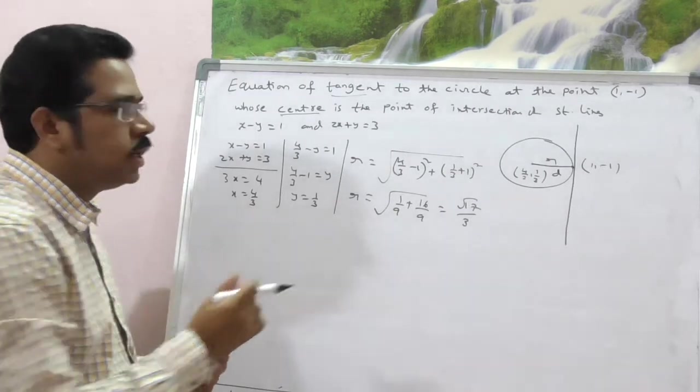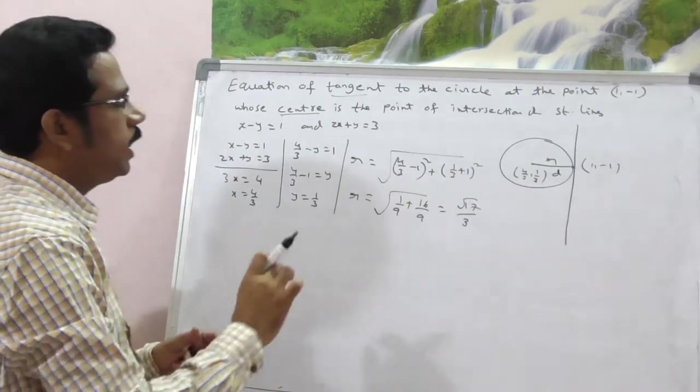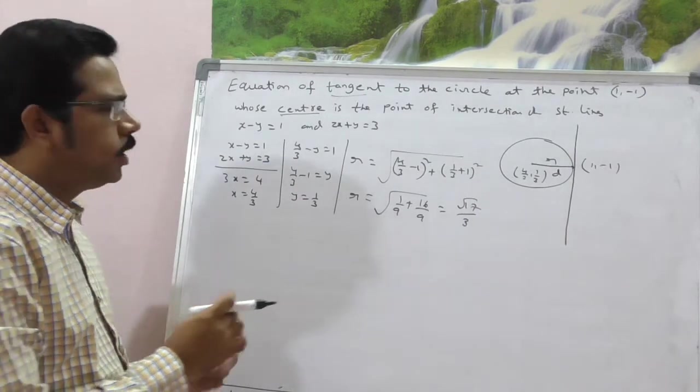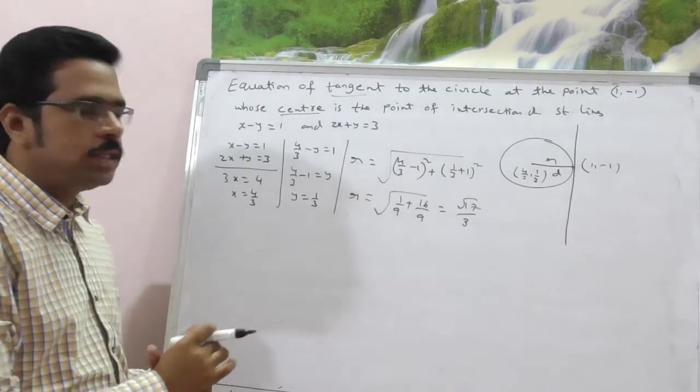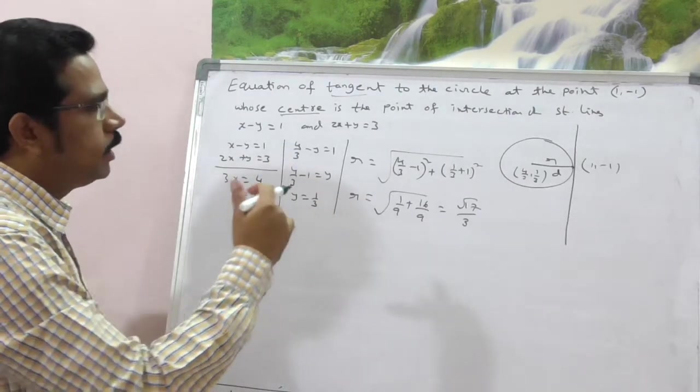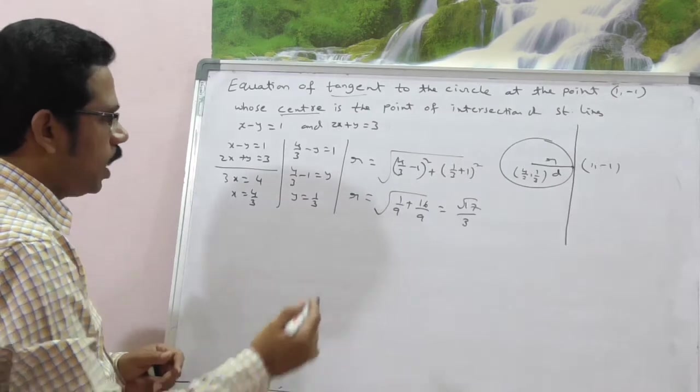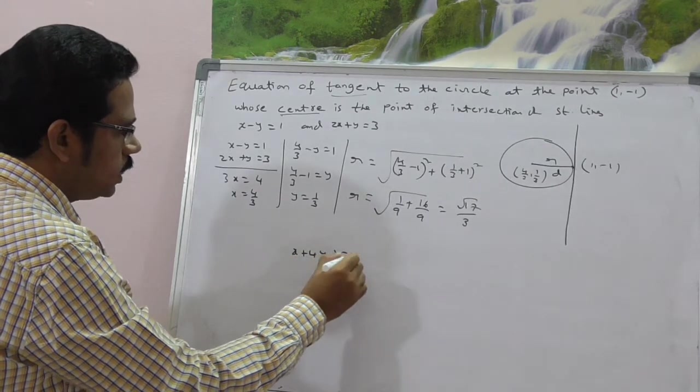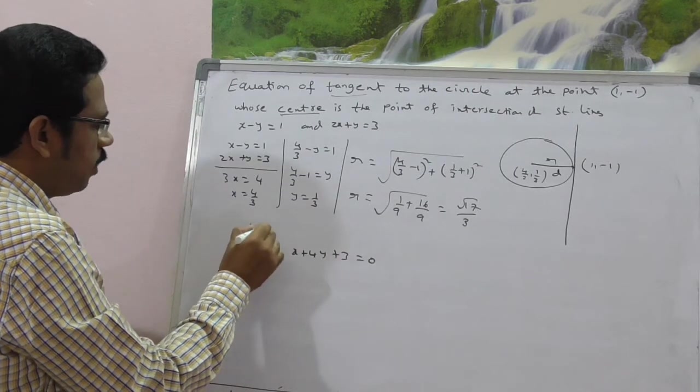Now, apply tangency condition. Check d, where the d value is equal to root 17 by 3. That is your answer. You don't need to solve the complete question here. Just use given options. If you observe one by one options, here from given options, one of the options is x plus 4y plus 3 is equal to 0. Verify options.